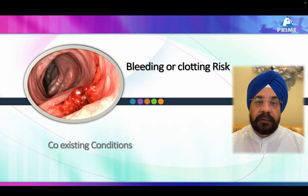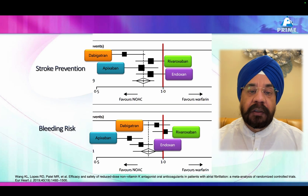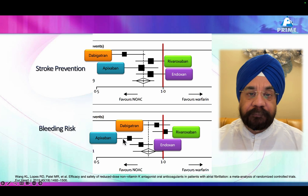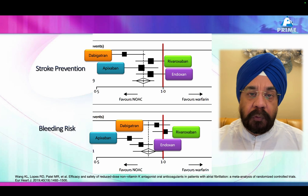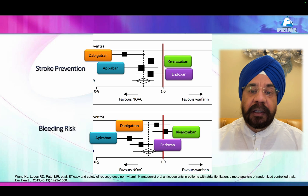Looking at a comparison slide of stroke prevention and major bleeding across drugs: it favors NOACs versus warfarin. Dabigatran showed better stroke prevention than apixaban in its trial, but its bleeding risk is also higher than apixaban. This means dabigatran is a more potent NOAC — it can prevent stroke in high-risk patients but leads to a higher chance of bleeding.